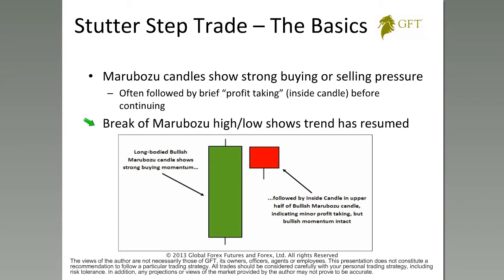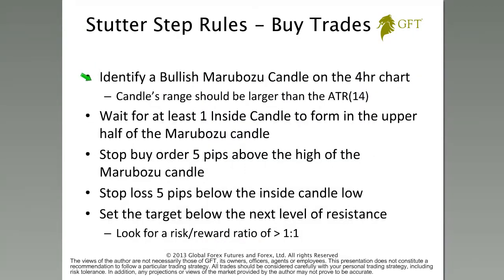Just to wrap up this introduction here: a break of the Marubozu high or low — in this case, we see a bullish Marubozu candle that shows us buying pressure, so we're looking for a break above the high. That's usually a good signal that the trend is resuming and that the market's starting to take back off in the same direction. These are the tools that we look for when identifying buy trades. We want to identify a bullish Marubozu candle. I highlighted using it on the four-hour chart, but I've found this strategy works very well on a number of different charts. We're looking for a strong move, then that pause, and the next move in the same direction.